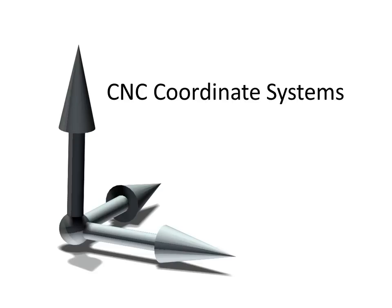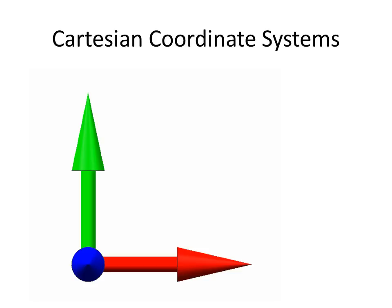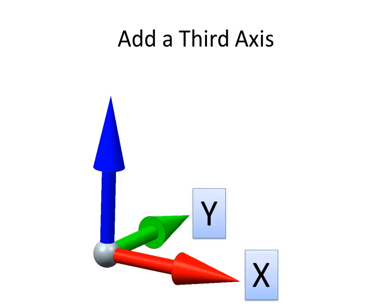We'll look at the coordinate systems used in CNC equipment. You're probably already familiar with the X and Y axes of the coordinate plane. In CNC, you need to add a third axis because we're dealing in three dimensions, so we'll add a Z axis.